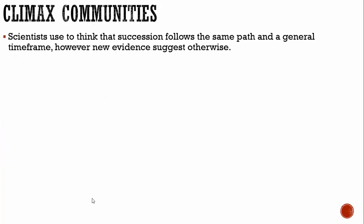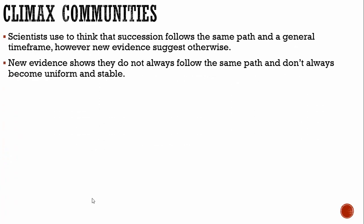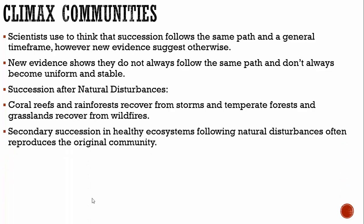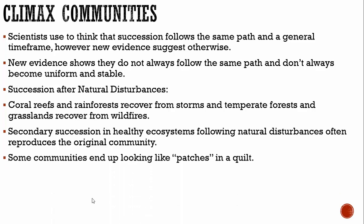Regarding the climax community: scientists used to think that succession follows the same path in a general time frame. However, new evidence suggests otherwise — it shows communities do not always follow the same path and don't always become uniform and stable. Coral reefs and rainforests recover from storms, and temperate forests and grasslands recover from wildfires. Secondary succession in healthy ecosystems following natural disturbances often reproduces the original climax community.